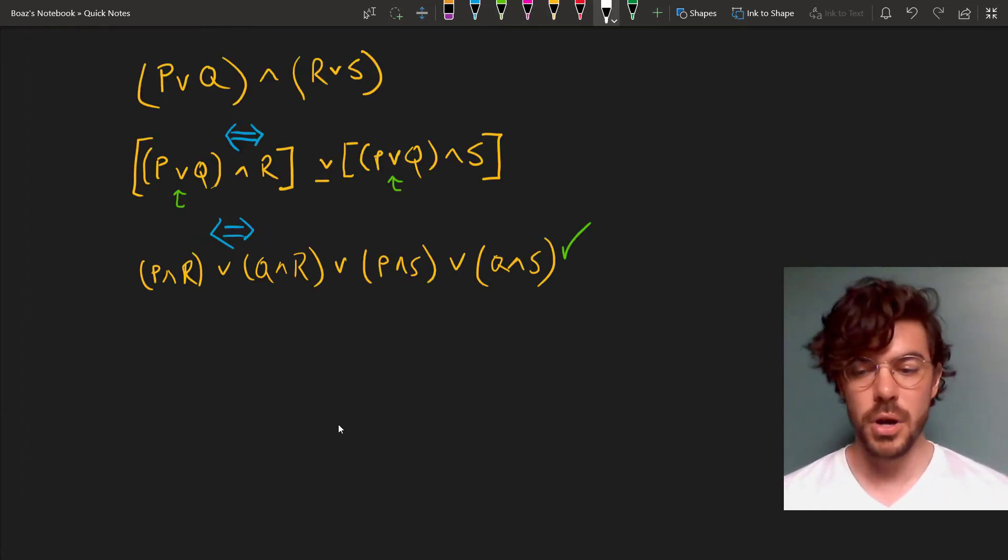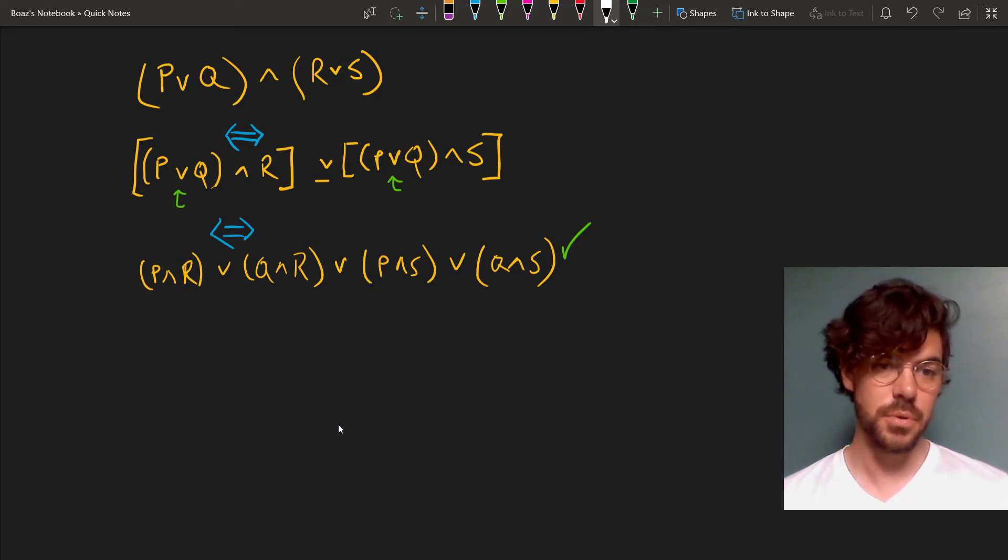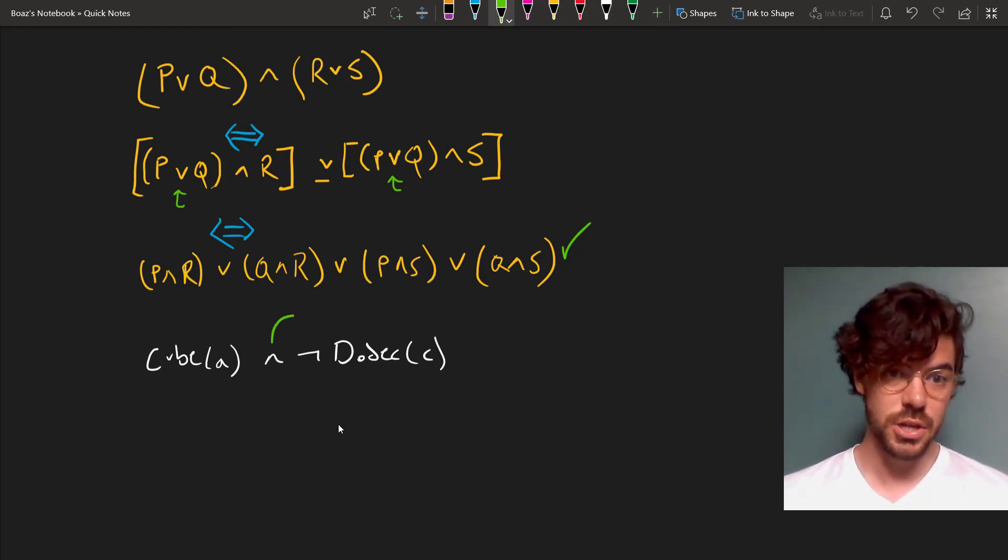Now I want to end with two remarks. The first is that some sentences are in both conjunctive and disjunctive normal form. Consider, for example, 'a is a cube and c is not a dodecahedron.' This looks like conjunctive normal form, and it is, because it's a conjunction of two sentence letters.